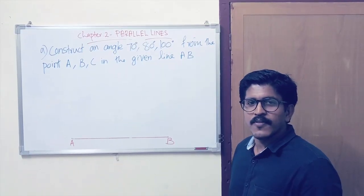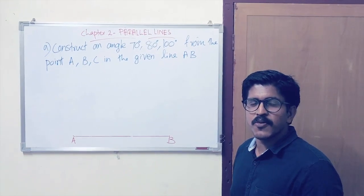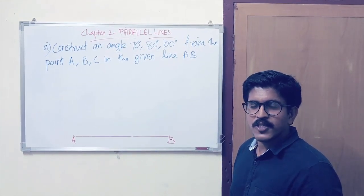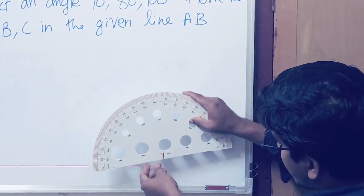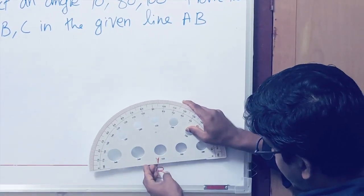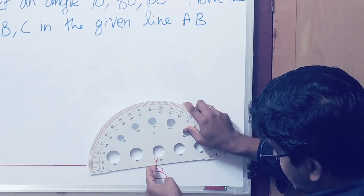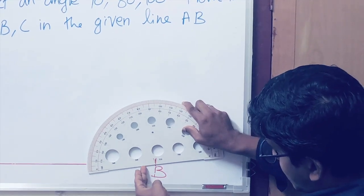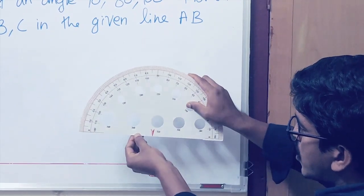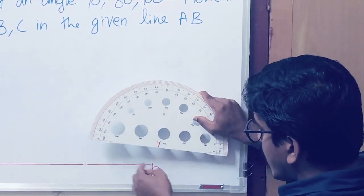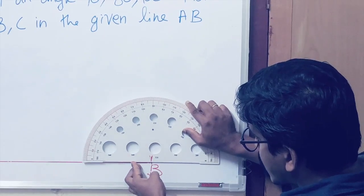Now, what we need to do is ensure two things before going to construct an angle. First, the center point of a protractor should coincide with the vertex where we are going to construct an angle — like this. Second, the baseline of a protractor should coincide with the line where we are going to construct an angle — like this.